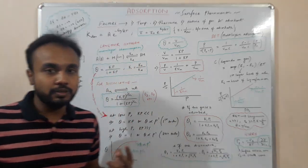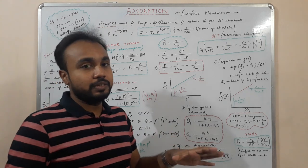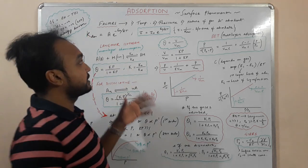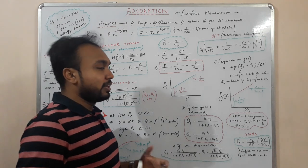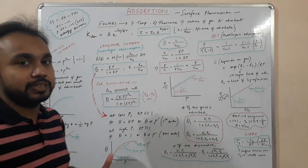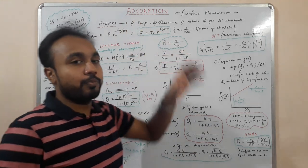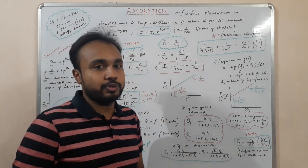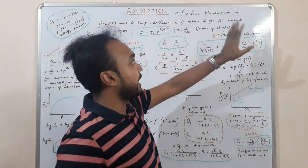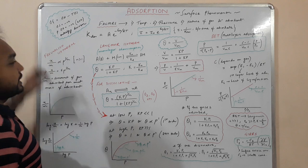There are two types of adsorption: chemisorption and physisorption. You already know what adsorbate and adsorbent are. The factors that affect adsorption: first is temperature — with decreasing temperature, more adsorption takes place. For pressure, when we increase pressure, more adsorption takes place. So temperature and adsorption are inversely proportional, and pressure and adsorption are directly proportional. It also depends on the nature of the gas and the adsorbent.